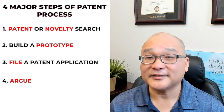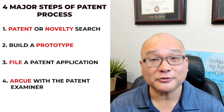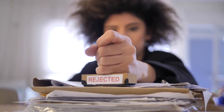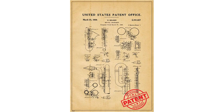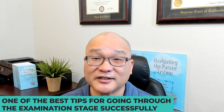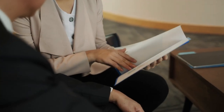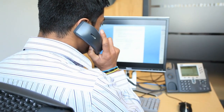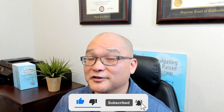Anyone claiming that your invention is theirs after seeing your product would be lying. The last step in the patent process is to argue with the examiner that your invention is worthy of a patent. Most patent applications are rejected by the examiner initially, but oftentimes if you just respond to the examiner, you can get a patent. One of the best tips for going through the examination stage successfully is to conduct an examiner's interview — this is where you can talk with the examiner over the phone so that he or she can better understand your invention.